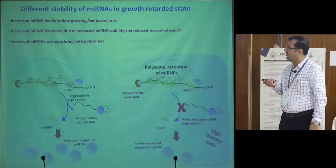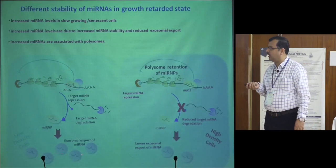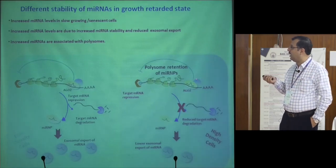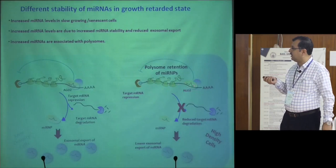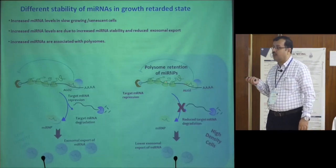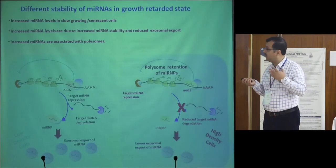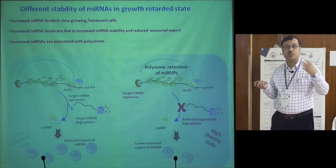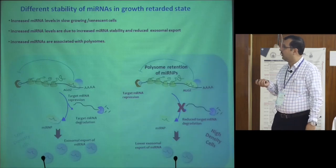He found that in proliferating cells, the turnover rate of microRNA is very high — they are exported out of the cell via the exosomal pathway. But when cells become senescent or growth arrested, microRNA remains bound with repressed messages and the export process is reduced. That means microRNA turnover is much less in growth-arrested cells, making them less proliferative. Exosomal export of microRNA is a hallmark of high proliferation and is probably also the way cancer cells lose their microRNA.